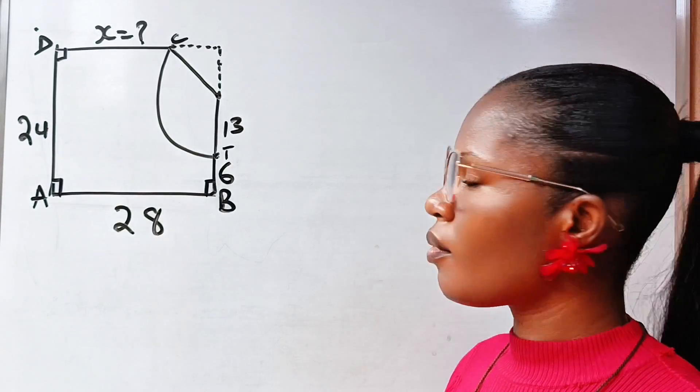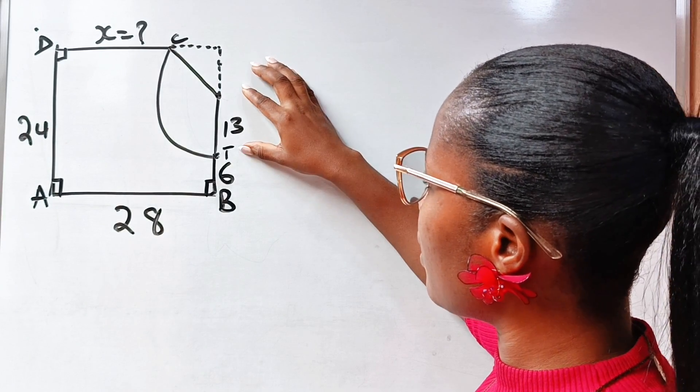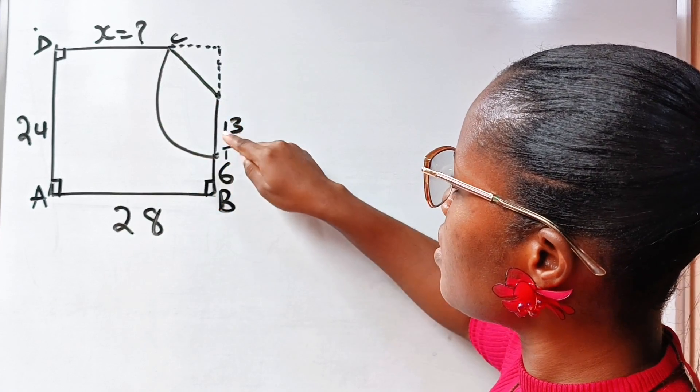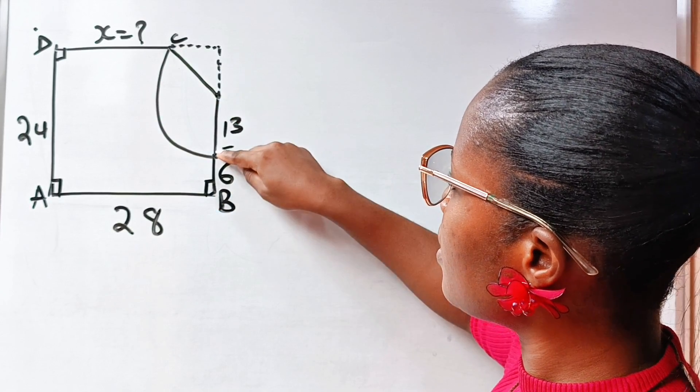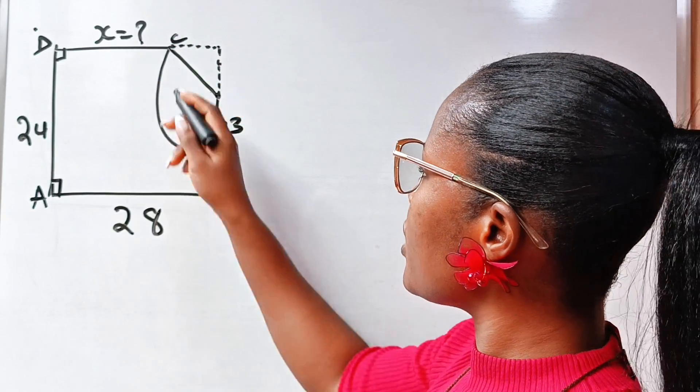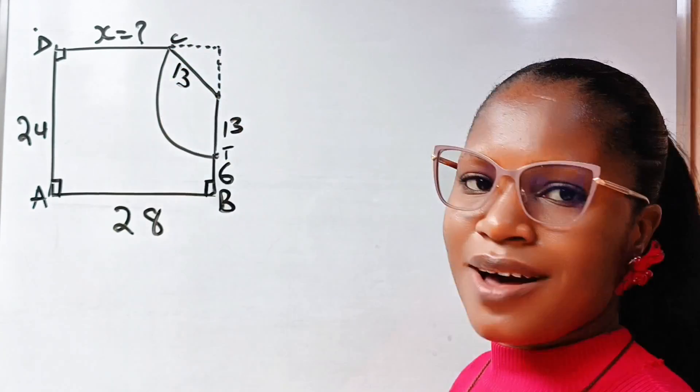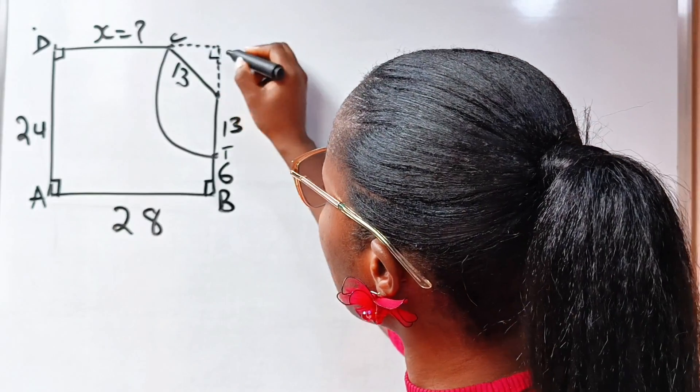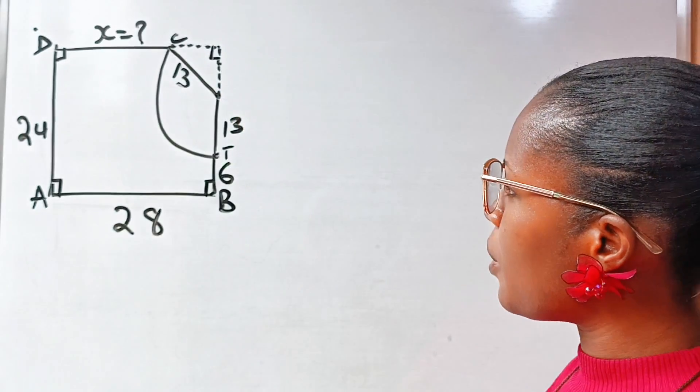Now, according to what we have here, from here to here is the radius of this circle, which is 13. From here to here is also the radius of this circle, so this is 13 as well. And this is 90 degrees. Remember, this is not drawn to scale.